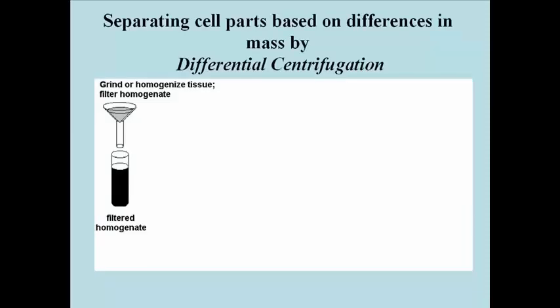This scheme for fractionating cells by differential centrifugation may look familiar. Cells or tissues are homogenized or ground up in a buffered solution intended to resemble the physical chemical characteristics of cytoplasm.